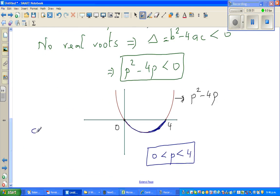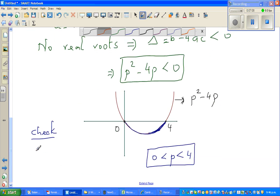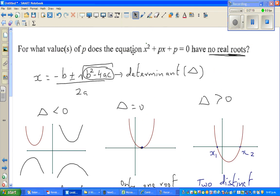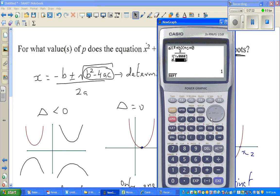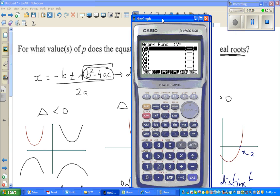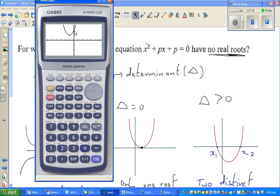Let us check. It's always good to check and understand what the answer is. If you take any value of p between 0 and 4, the parabola that you'll get will be something like this. Let me take p is equal to 2 and use my graphic calculator. We know the equation is x squared plus px plus p. Let me go to graph and type in x squared plus 2x plus 2. You can see this is above the x-axis.